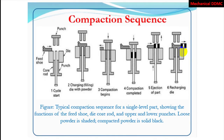In the compaction sequence, you can see that pressing is applied from the upper punch while the bottom punch is stationary. After compaction is complete, the green compact is ejected. This leads to sintering.